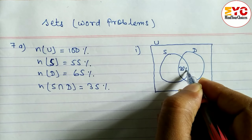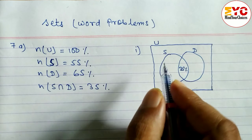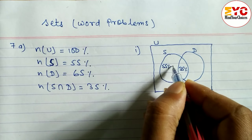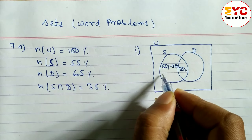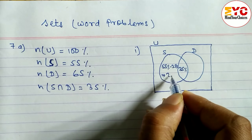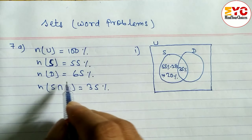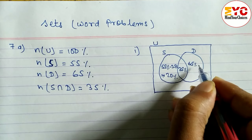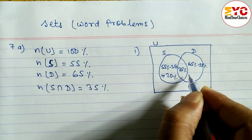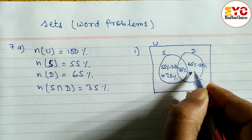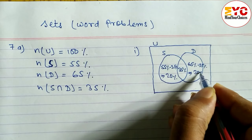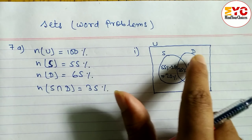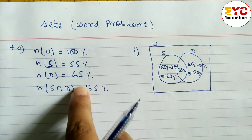For song: 55 percent minus 35 percent gives us 20 percent — that's the part who like song only. For dance: 65 percent minus 35 percent gives us 30 percent — that's the part who like dance only. Outside the circles, the person who didn't like song and dance is not given, so no need to show it here.